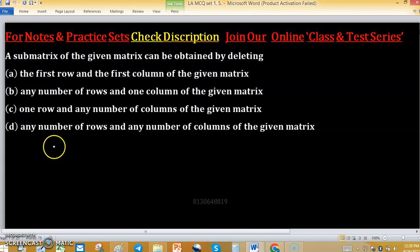A submatrix of the given matrix can be obtained by deleting any row and any column from the matrix. Suppose this is a 3x3 size matrix having the elements like A, B, C, D, E, F, G, H, I. You can delete any row and any column.